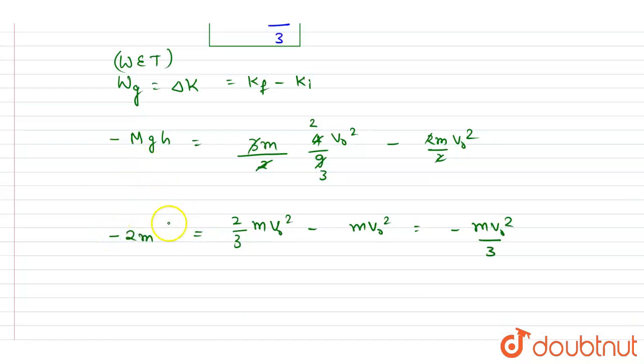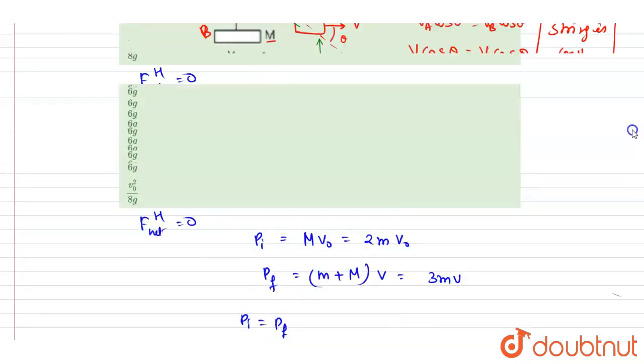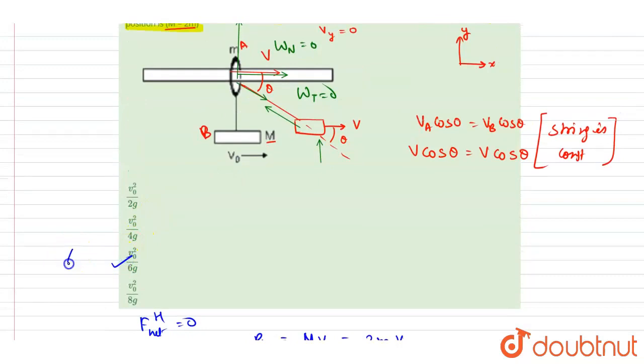minus 2mgh, since capital M is 2m. We want this h, so I will write down h is m v0 square by 3 in division. I will write down 2mg, so this is v0 square by 6g. And this is the answer. Now you can check for the option, so C here is the correct one. Thank you.